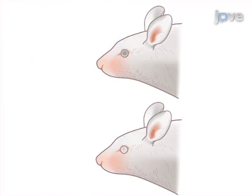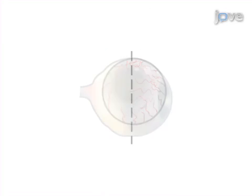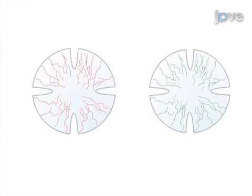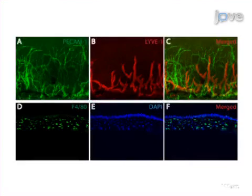Next, the mouse is euthanized and the injured eye harvested, dissected, and immunostained in order to quantify the level of neovascularization and inflammation. The results show a quantifiable reduction in neovascularization based on both clinical observation and immunostaining. The implications of this technique extend towards new therapies for corneal blindness, because it provides a reproducible level of neovascularization against which you can test new compounds and therapies.